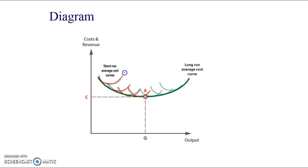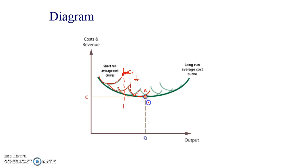What these short-run curves represent would be short-run average cost one, short-run average cost two, and so on. When the curve becomes vertical, that's representing the maximum output the firm can produce at that level of production. But if they're able to expand, they actually move their cost curve downwards, which means costs are decreasing. So why do larger firms have smaller average costs, and why after a certain point do their average cost curves start to increase?